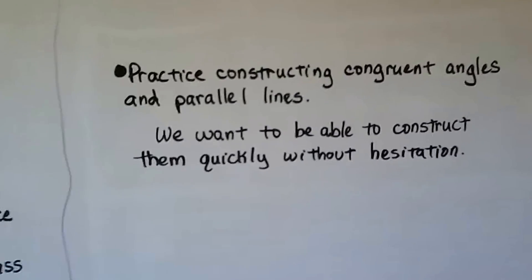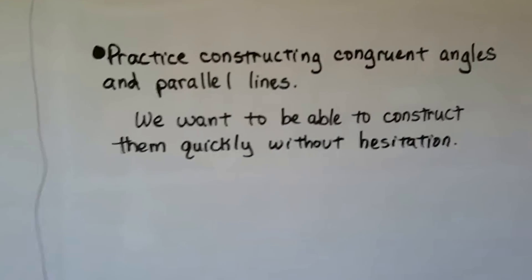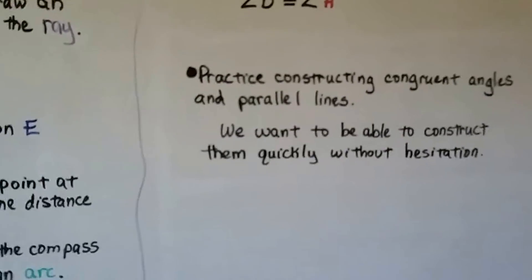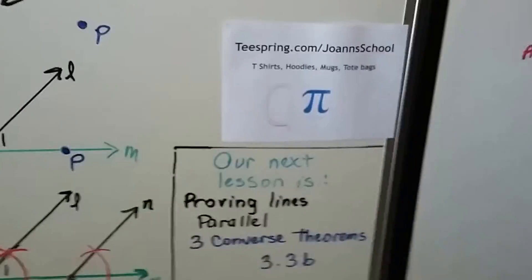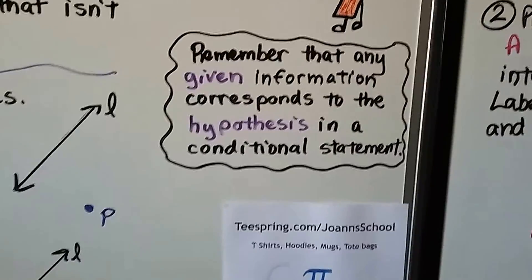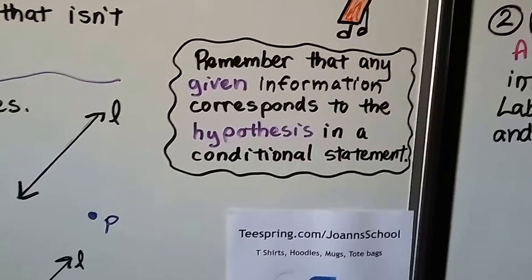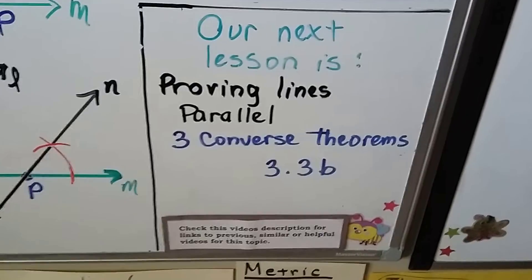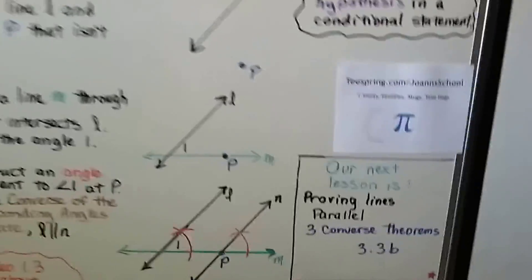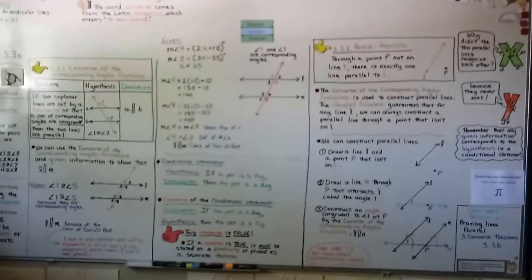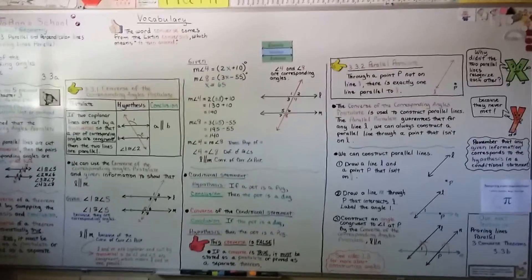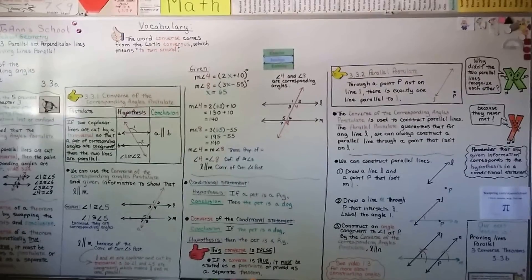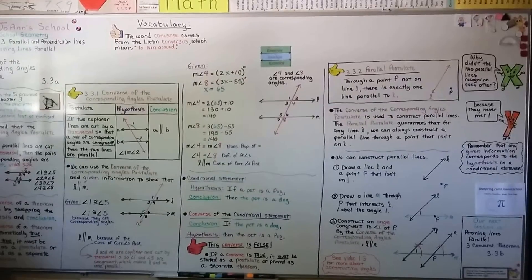Practice constructing congruent angles and parallel lines — we want to be able to construct them quickly without hesitation. Put this in your notes, or rewind the video to review how it's done. Remember that any given information corresponds to the hypothesis in a conditional statement. Our next lesson is proving lines parallel with three converse theorems — that's Lesson 3.3b. I hope you took good notes, hit the like button if you find my videos helpful, and I'll see you next time.